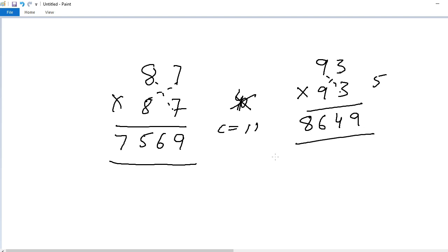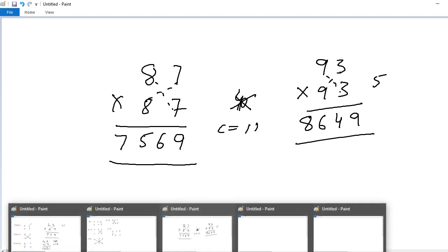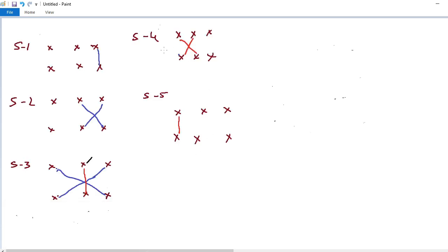Next, I will explain how to crack 101 to 999 squares. These are the steps. I will explain these steps with the help of one example. For example, 124 square. 124 into 124.